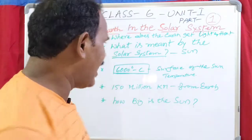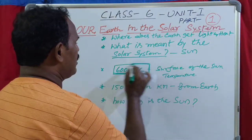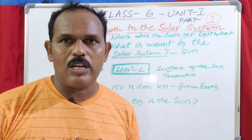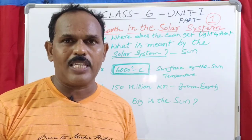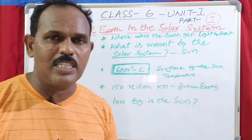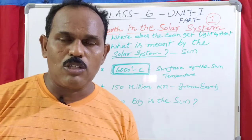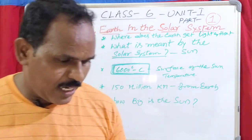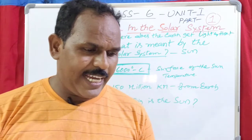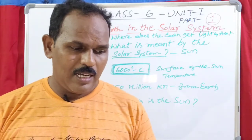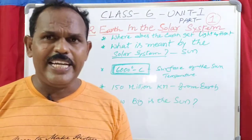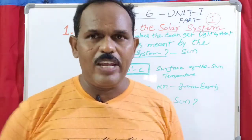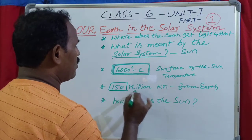The sun is the ultimate source of heat and light for the solar system. The surface temperature of the sun is around 6000 degrees centigrade. The sun is about 150 million kilometers away from us, which is why its tremendous heat is not felt so strongly by us.